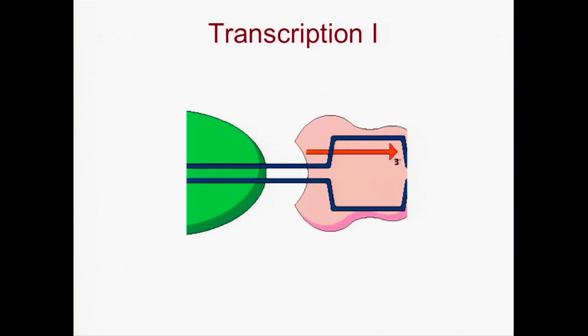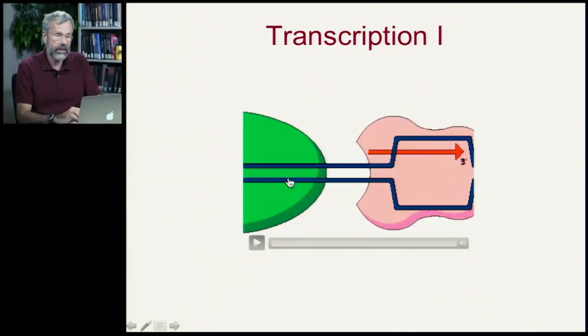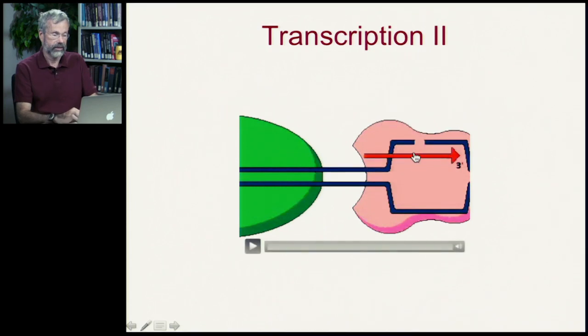Okay, so there's a lot of details here that are unnecessary for this course. You don't need to know the names of these different enzymes. What I really want you to get is that we have the temporary separation of the complementary partners of the DNA. One strand is then used as a template, and then these individual nucleotides, or in the case of RNA, ribonucleotides, come in in sequence to match what is complemented here on the template strand.